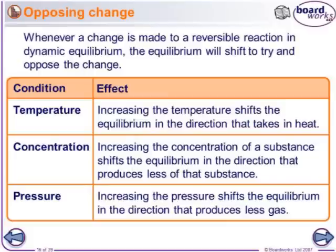If you have a state of dynamic equilibrium and you increase the temperature, you're increasing the amount of thermal energy in that system. Then the equilibrium will go in the direction of the reaction that will take heat in — it will try to absorb the heat, take it away, and counteract the change. It's trying to re-establish, meaning get back to the state of dynamic equilibrium.